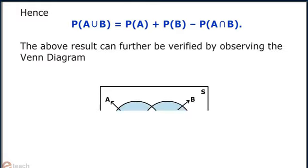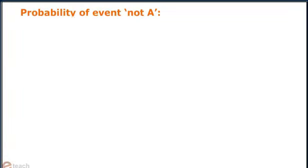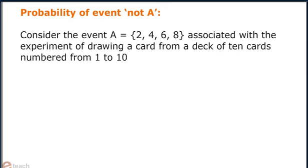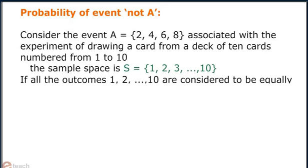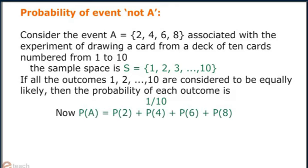The above result can be further verified by observing the Venn diagram. Probability of event not A. Consider the event A containing 2, 4, 6 and 8 associated with the experiment of drawing a card from a deck of 10 cards numbered 1 to 10. The sample space S contains 1, 2, 3 up to 10. If all the outcomes in the sample space are equally likely, then the probability of each outcome is 1/10. Now probability of A equals probability of 2 plus probability of 4 plus probability of 6 plus probability of 8, which equals 4 times 1/10, that is 2/5.